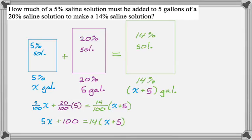From here I just want to solve. I'm going to distribute on the right-hand side. So I get 5x plus 100 equals 14x plus 70. I want to move everything with an x to one side, everything without an x to the other side. So I get 30 equals 9x.